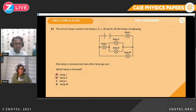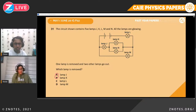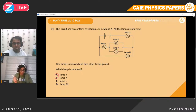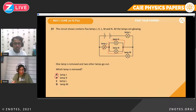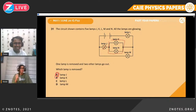Question thirty-one. A circuit contains five lamps J, K, L, M, and N. All lamps are glowing. Which one lamp, when removed, causes exactly two other lamps to go out? If we remove lamp J, those two lamps in the branch connected through J are no longer connected to the main circuit, so they go out. If we remove L or M, the whole circuit would cut off. Therefore the answer is J.